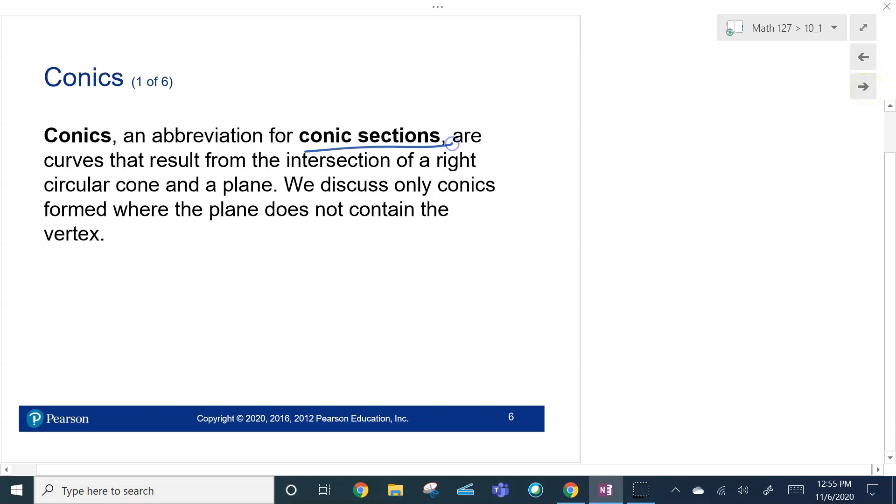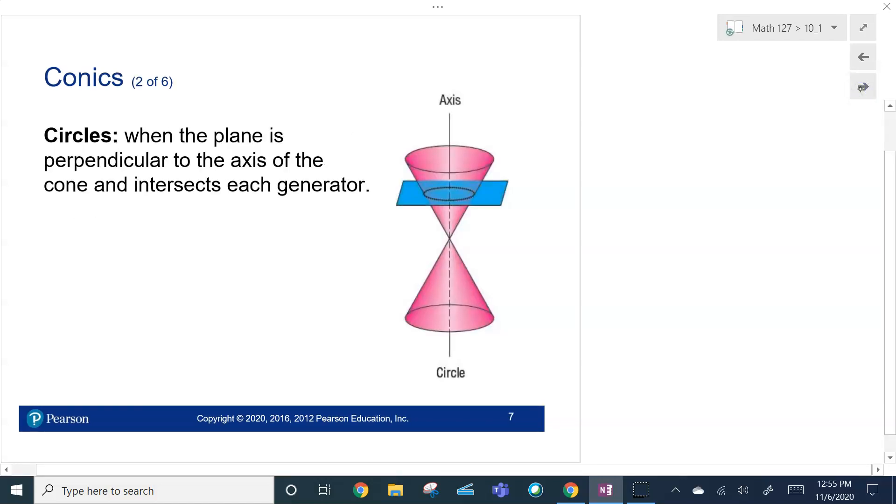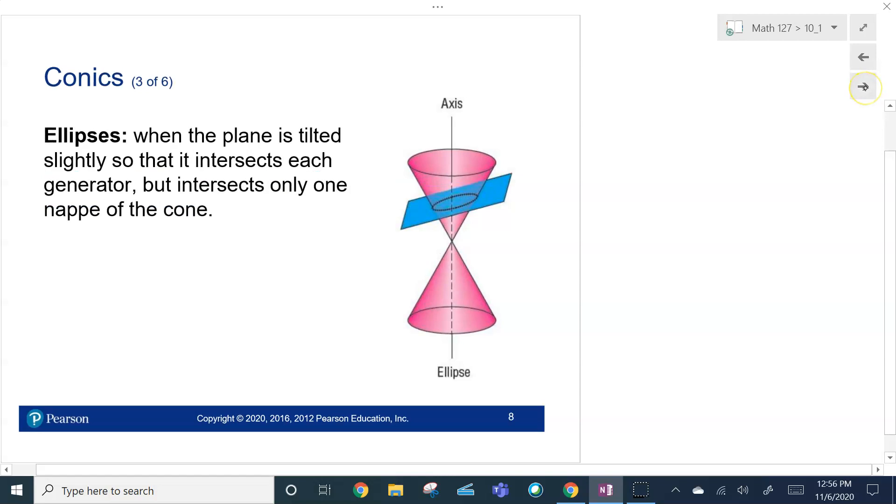Conics are simply an abbreviation for conic sections. When we take a plane and intersect it, we're going to create these conics or conic sections. Let's start out with circles. Circles are when you take a plane that is perpendicular to the axis of the cone, and it intersects each generator. It's perpendicular to the axis. So, you can see we've created the circle there. A perfect circle.